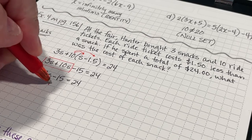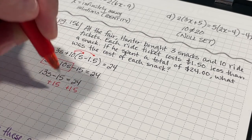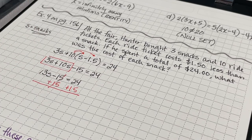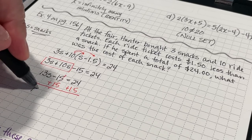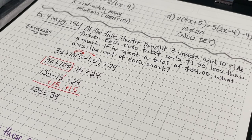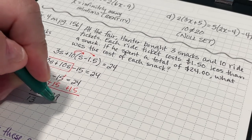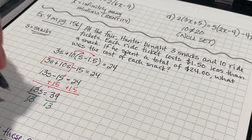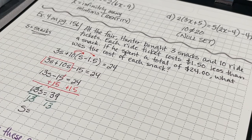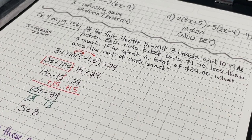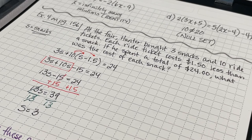Now, I'm going to add 15 to both sides. My negative 15 plus 15 is 0, so I'm going to have 13S equals 39. Now, I'm going to divide both sides by 13. 13S divided by 13 is S, and 39 divided by 13 is 3. So, the cost of the snacks are $3 each.